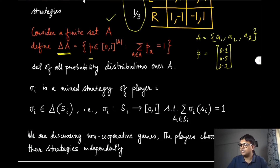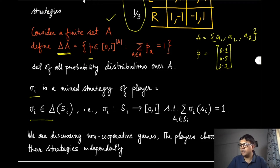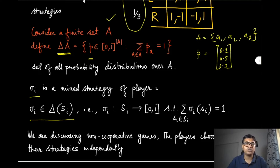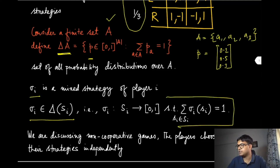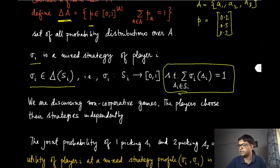Now, what is a mixed strategy for player i? Sigma_i, with which we denote the mixed strategy of player i, is a member of Delta(S_i), where S_i is the finite strategy set. What we are saying is that agent i puts certain probabilities on all the strategies available to it, in such a way that each probability is non-negative and they sum to one. A very simple definition.